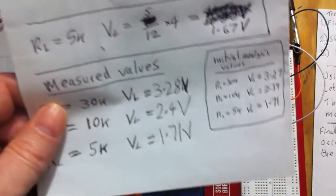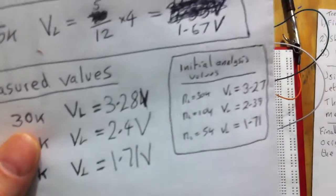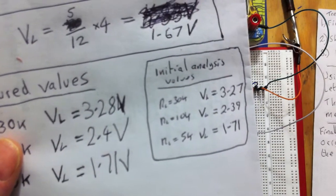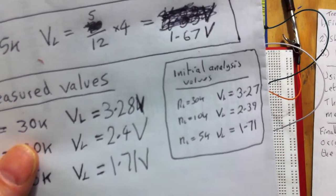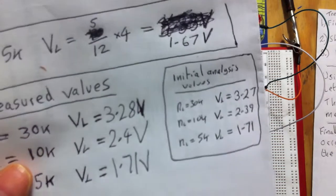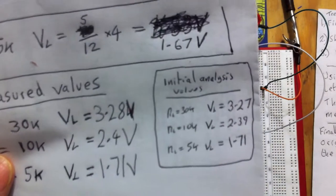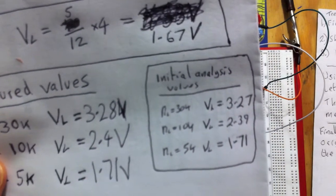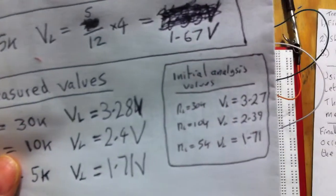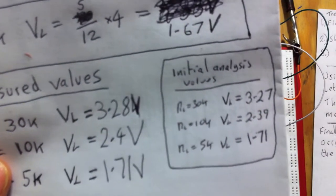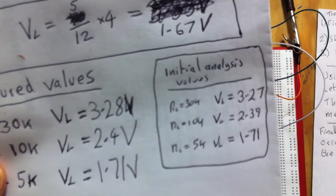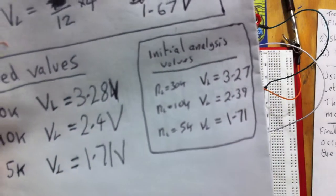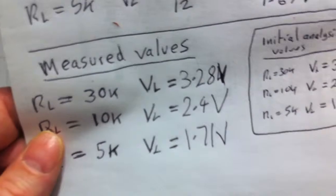And compared to the actual initial analysis, which I've just put there in that little box. That was the actual complete analysis of just using the circuit components without doing any lab. So the actual circuit analysis gave us for 30k 3.27 which compares to 3.28, very close. And the load resistance of 10k was 2.39 and we got 2.4. And for 5k it was 1.71, and look, we've got 1.71.